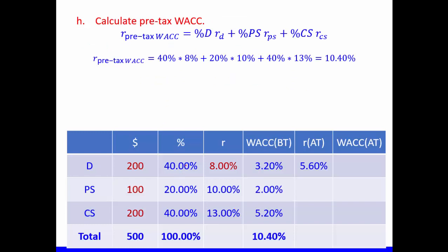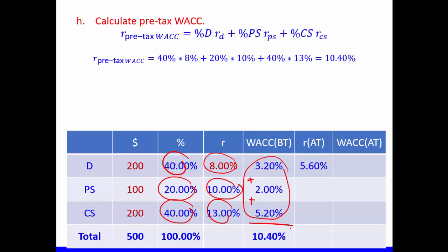We put 13% in our table. Now we calculate the pre-tax WACC: weight of debt × pre-tax cost of debt + weight of preference shares × cost of preference shares + weight of common shares × cost of common shares. That gives: (40% × 8%) + (20% × 10%) + (40% × 13%) = 3.2% + 2% + 5.2% = 10.4%. This is our pre-tax WACC.